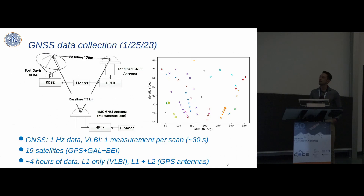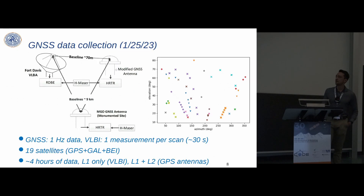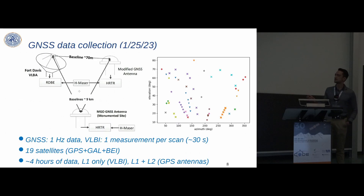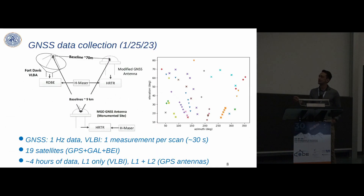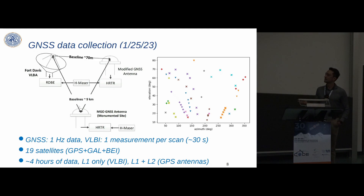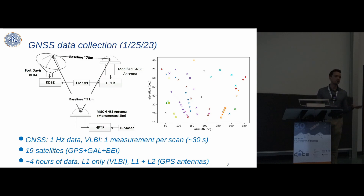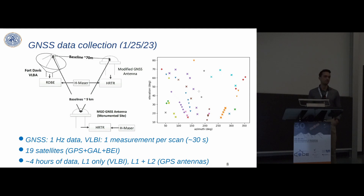This experiment was conducted in January 2023 at Fort Davis, Texas using the Fort Davis VLBA radio telescope. About 70 meters away we deployed on a tripod our geodetic GNSS antenna connected to the HERDER tracking receiver. We also used the hydrogen maser from the VLBA telescope for our own processing. About 9 kilometers away at the University of Texas McDonald Geodetic Observatory — a co-location site with a VGOS antenna, five IGS monuments, SLR coming, and more — we have another GNSS antenna on a monument and a choke-ring antenna.